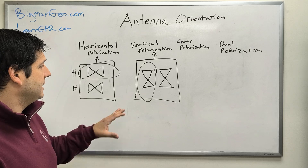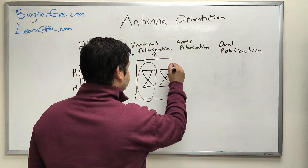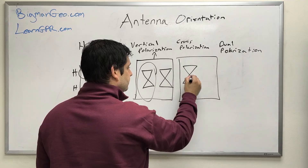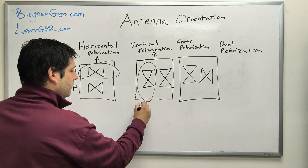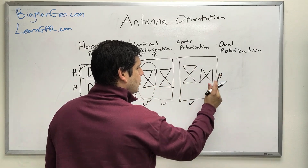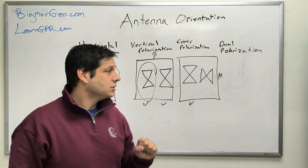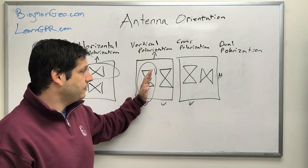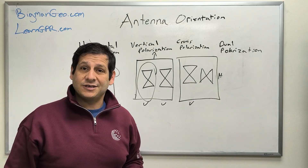Systems are coming out that have been termed as cross-polarization, but in reality, cross-polarization was originally configured differently. Instead of having both antennas vertical or both horizontal, true cross-polarization means you have one antenna vertical and one antenna horizontal inside the box. So you're pairing a horizontal polarization with a vertical polarization — rather than keeping them the same, horizontal-horizontal or vertical-vertical. That is a cross-polarized orientation for the antennas.